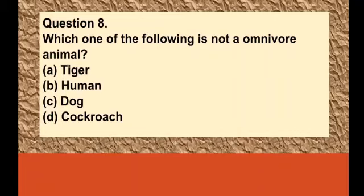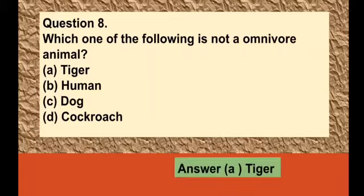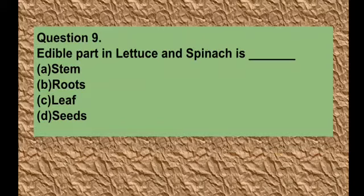Question number eight: Which one of the following is not an omnivore animal? Options are option A tiger, option B human, option C dog, option D cockroach. The answer is tiger, because tiger is a carnivore, not an omnivore.